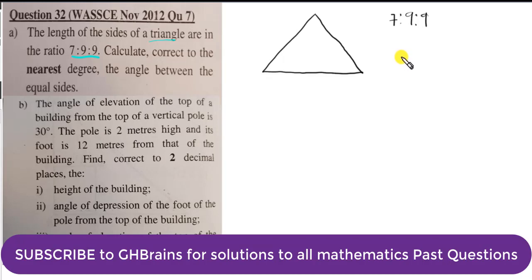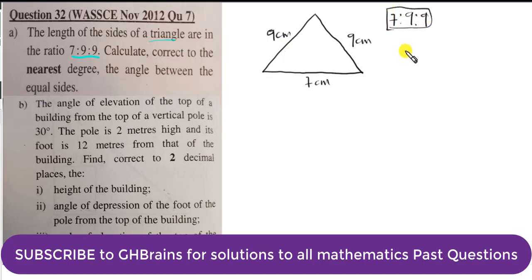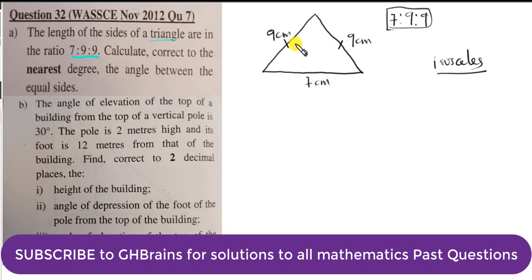When we talk about ratio, ratio has no unit. So if we assume the lengths are in centimeters, here is 7 cm, and the other two sides are each 9 cm. This tells us that the triangle is an isosceles triangle - a triangle that has 2 of its sides and angles equal. So we know these 2 sides of the triangle are equal, being 9 and 9.